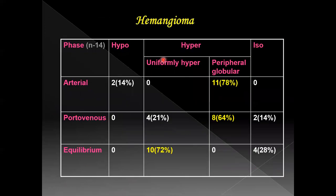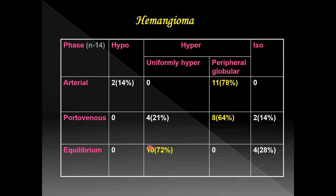Hemangioma was seen in 14 cases. The most common enhancement pattern in the arterial phase was peripheral globular enhancement, seen in 78% of cases. In the portal venous phase, it was again peripheral globular enhancement, and in the equilibrium phase, it showed uniform hyper-enhancement.